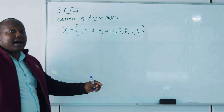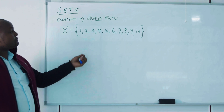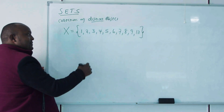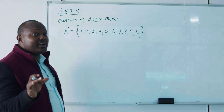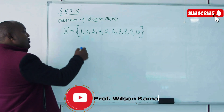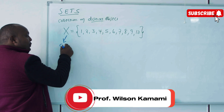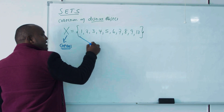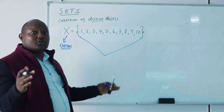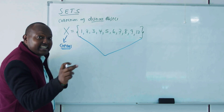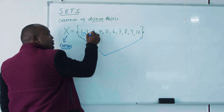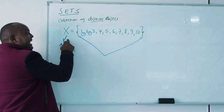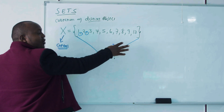So we have a set of numbers between one and ten. I want us to understand how we name sets, because many students have a problem with naming sets. One thing to highlight: your set should be named with capital letters. We use curly brackets to enclose the elements inside the set, and we separate elements using commas. So set X has elements one, two, three, all the way to ten.